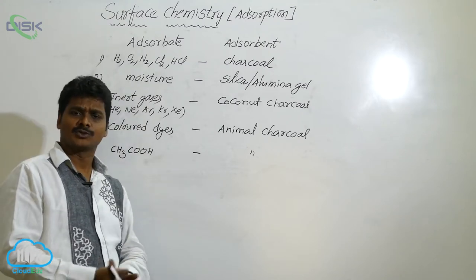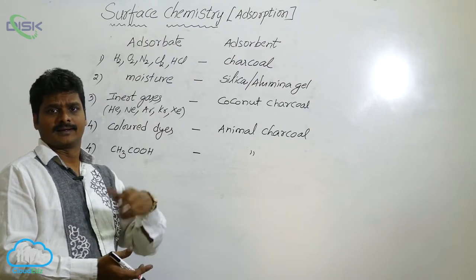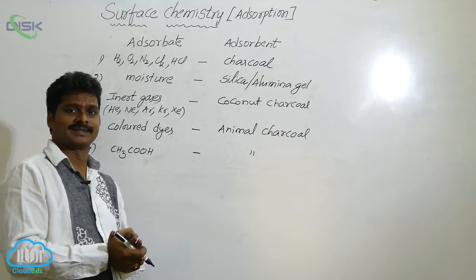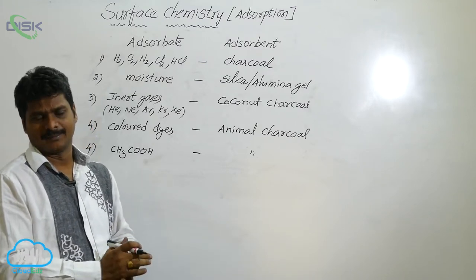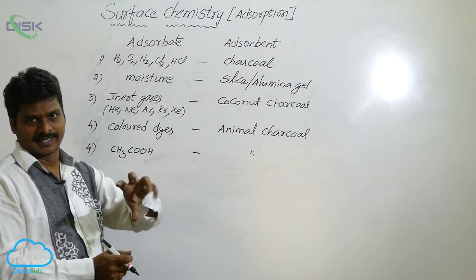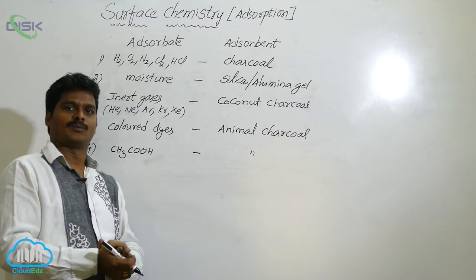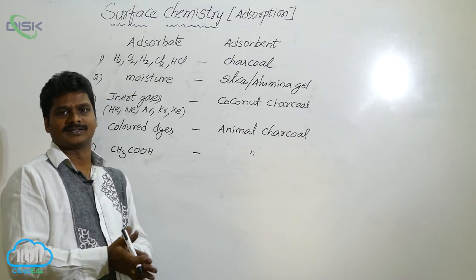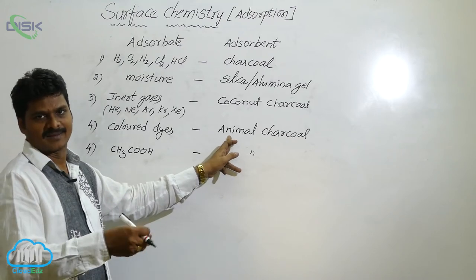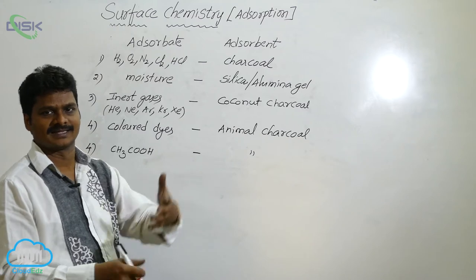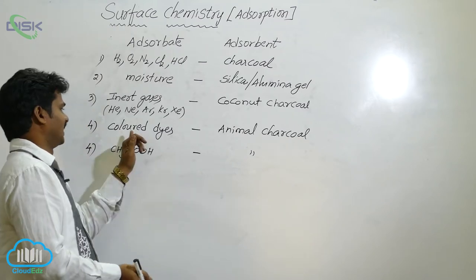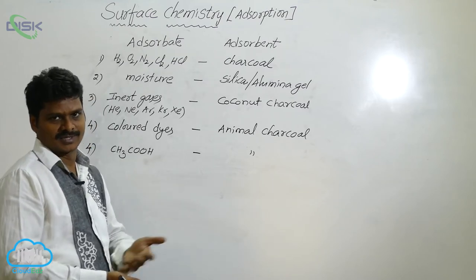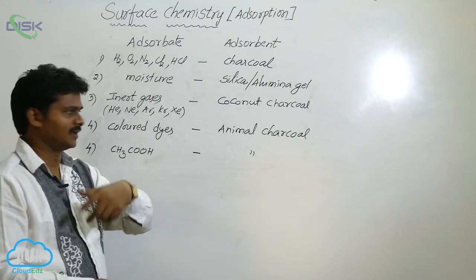In the sugar industry, sugarcane juice contains molasses with some impurities. Because of those impurities the molasses is colored. To decolorize it, animal charcoal is added, which adsorbs all the color-causing impurities from the solution. In this way, colored dyes are adsorbed by animal charcoal.